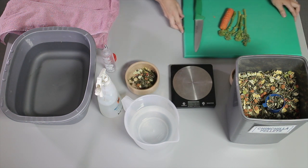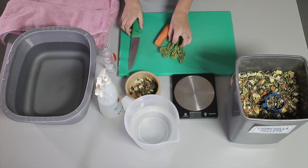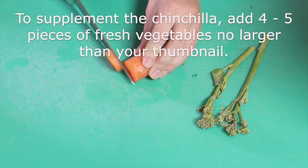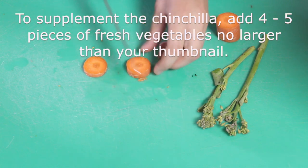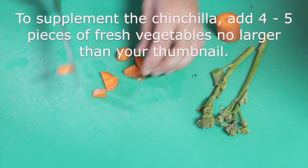To supplement the chinchilla, I want to offer some vegetables. When chopping these up, be very careful with the use of a sharp knife. The chinchilla needs approximately four to five pieces, no larger than my thumbnail.